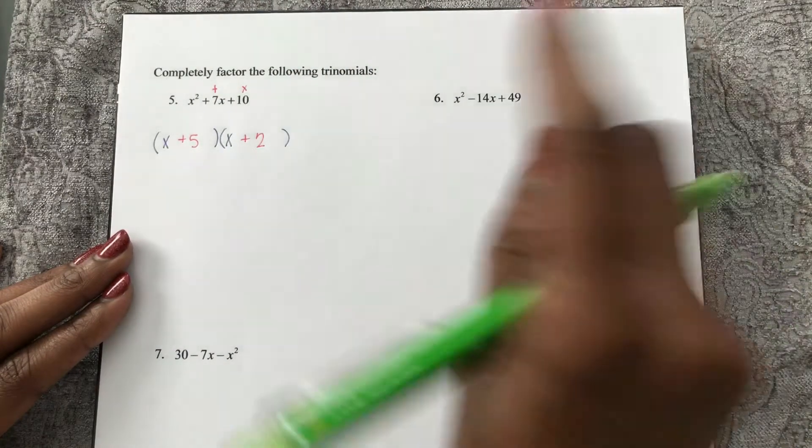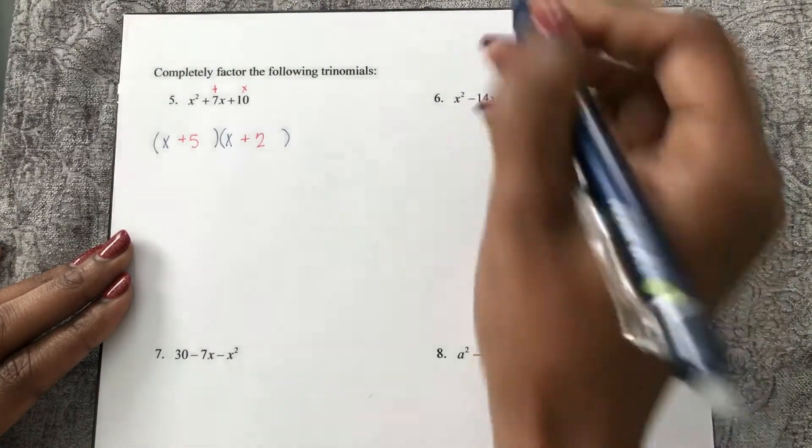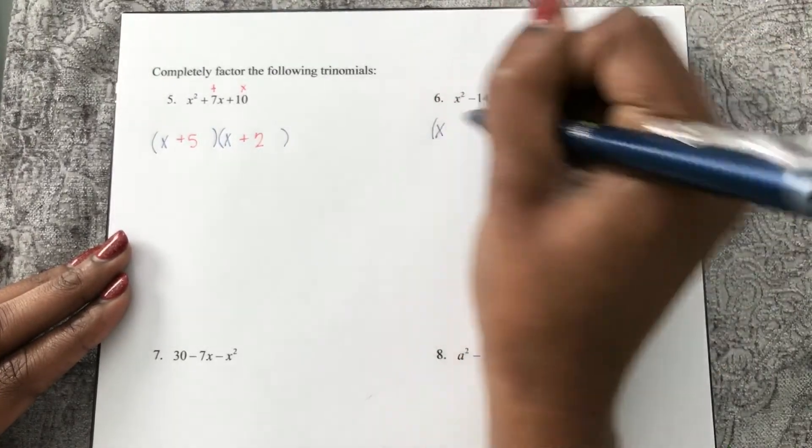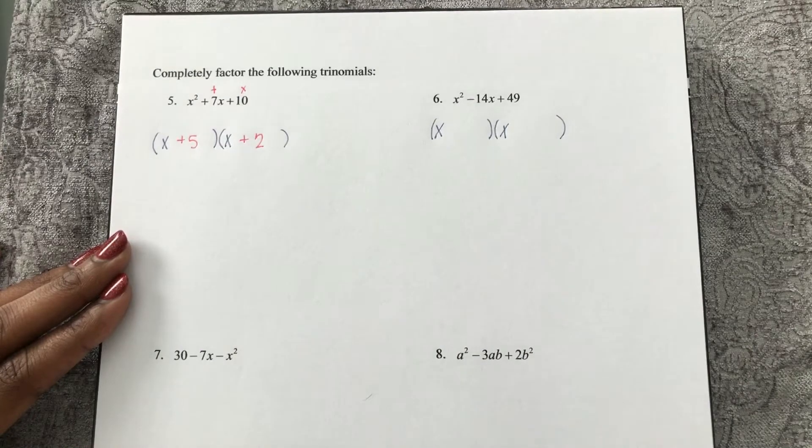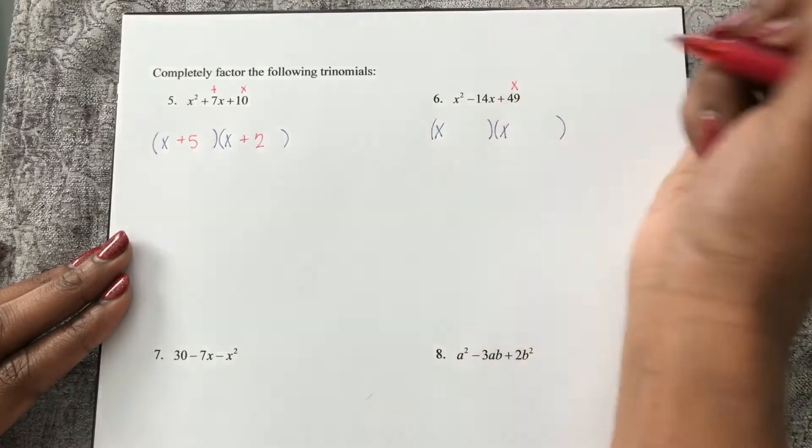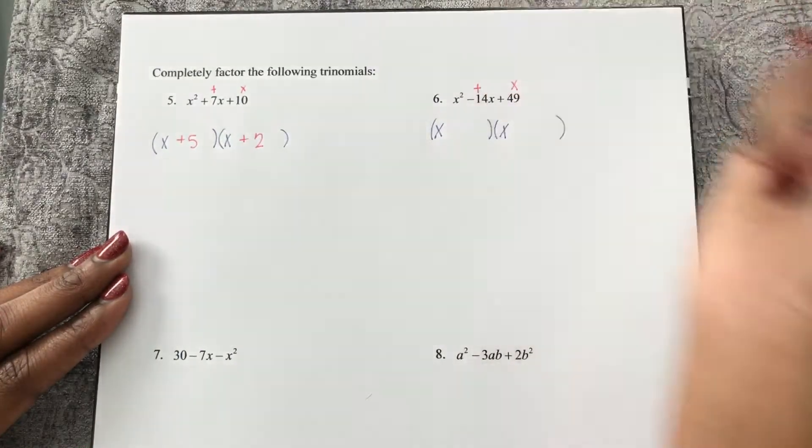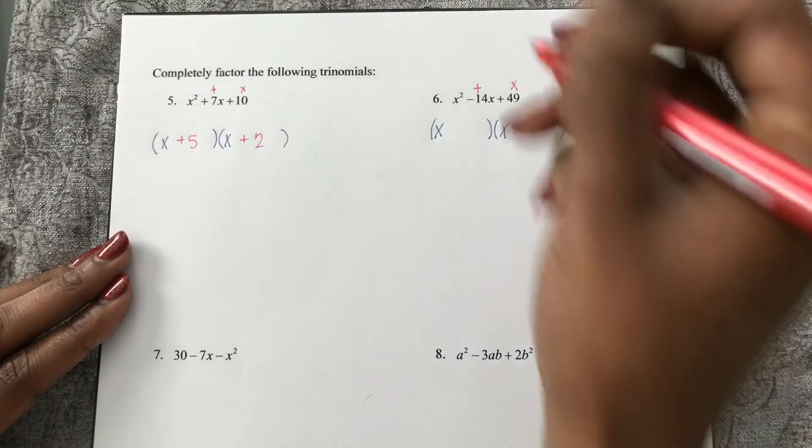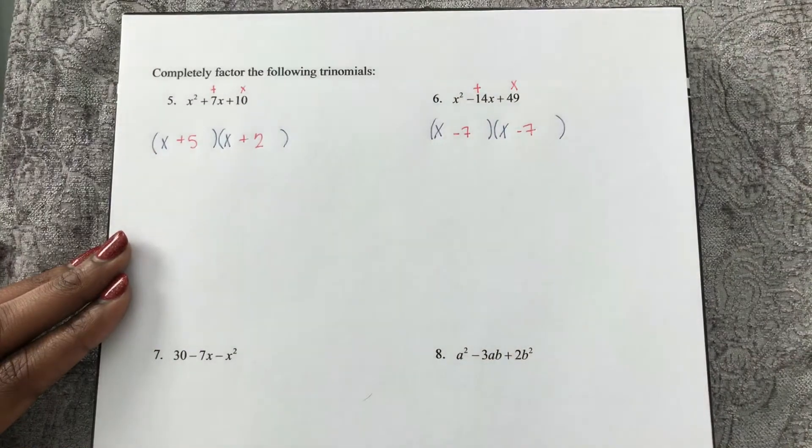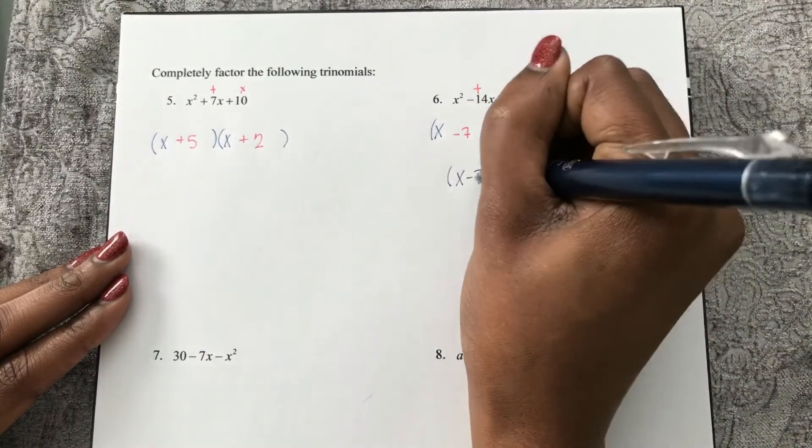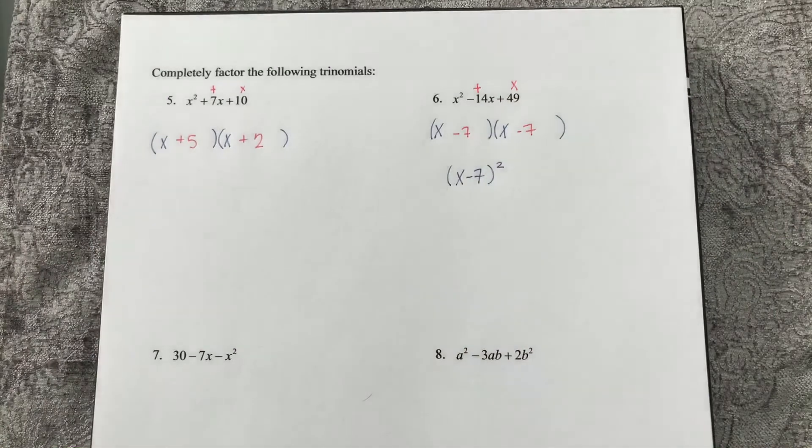So now here, once again, pretty easy setup since my leading coefficient is 1. I know our first FOIL is going to be x times x. So now I look for two numbers that multiply to make 49 and add to make negative 14. Those numbers are negative 7 and negative 7. So in a condensed format, that is x minus 7 squared.